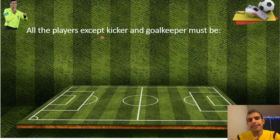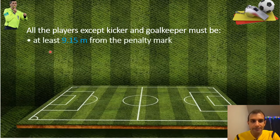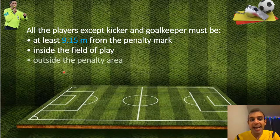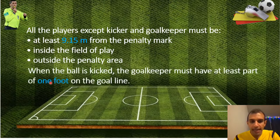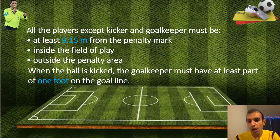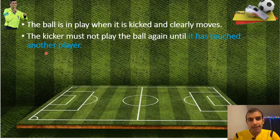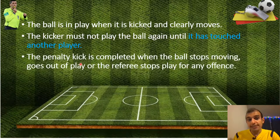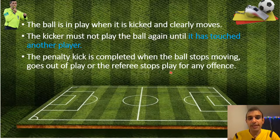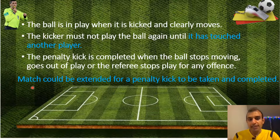All players except the kicker and goalkeeper must be at least 9.15 meters from the penalty mark, inside the field of play and outside the penalty area. When the ball is kicked, the goalkeeper must have at least part of one foot on the goal line. The ball is in play when it is kicked and clearly moves. The kicker must not play the ball again until it has touched another player. The penalty kick is completed when the ball stops moving, goes out of play, or the referee stops play for any offense. A match may be extended for a penalty kick to be taken and completed.